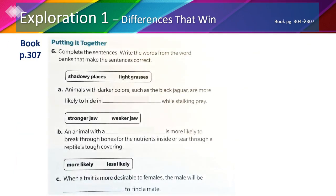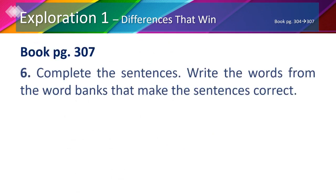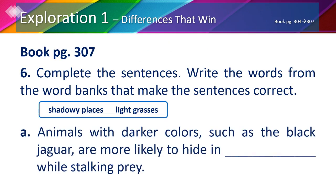On page 307 number 6, we're going to solve the sentences together. In part A, using the words 'shadowy places' and 'light grasses': animals with darker colors such as the black jaguar are more likely to hide in blank while stalking prey. Since black jaguars can't hide in the grassland due to their dark color, they tend to hide in the trees, so the answer is 'shadowy places.'